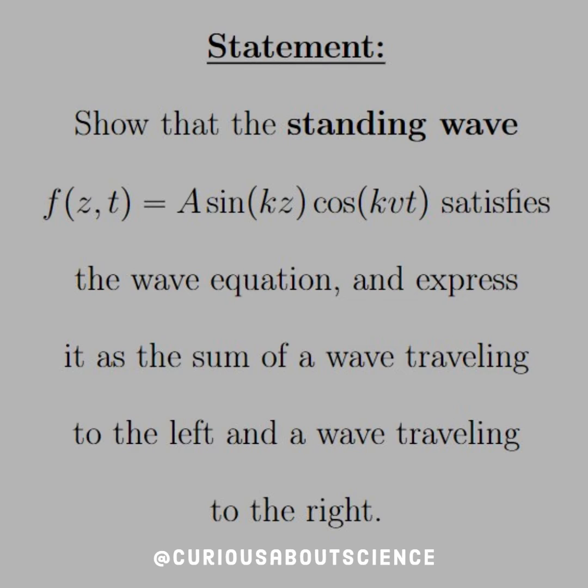The statement reads: show that the standing wave f(z,t) = A sin(kz) cos(kvt) satisfies the wave equation and express it as a sum of waves traveling to the left and a wave traveling to the right.